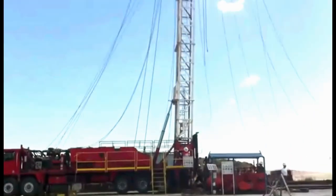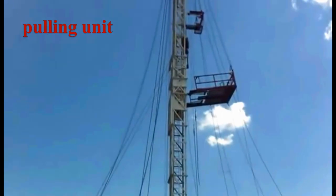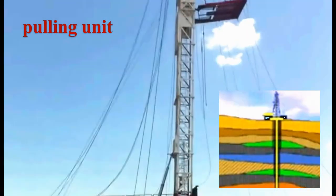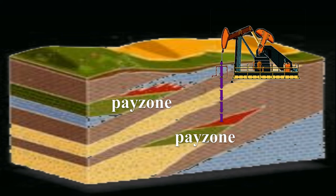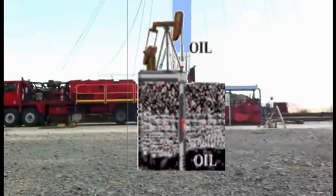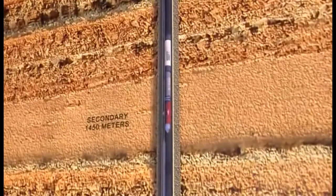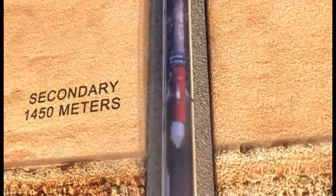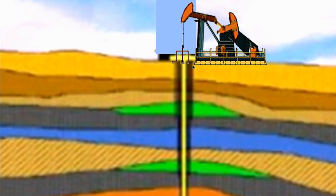Let me explain in a little more detail the steps involved in doing a typical workover using a pulling unit to re-perforate a new zone above a depleted one. As you've seen in other chapters, there may be more than one pay zone in the reservoir. Often, the bottom zone is completed initially and produced to depletion. When this occurs, the well is then worked over to plug off the old zone and complete a new one in the upper zone.